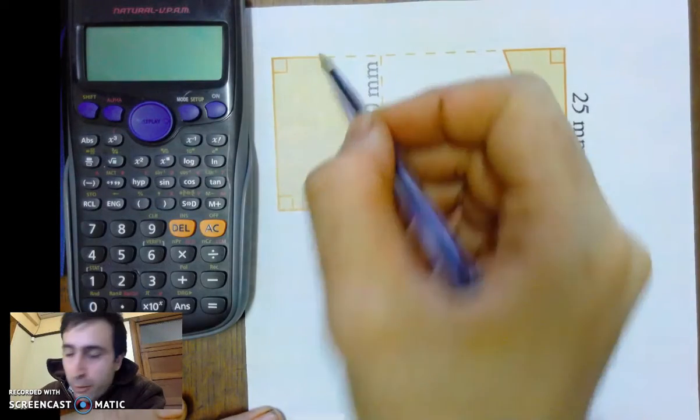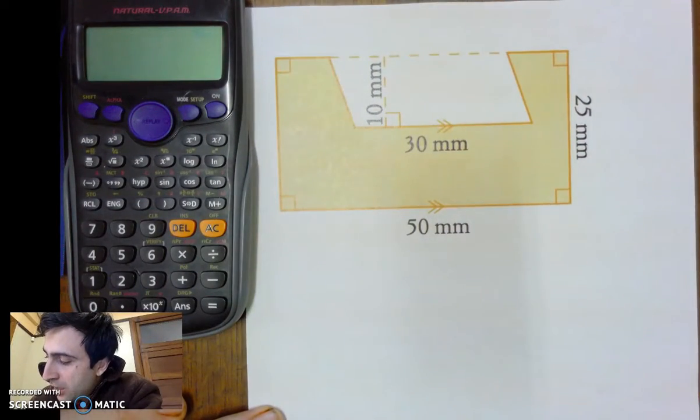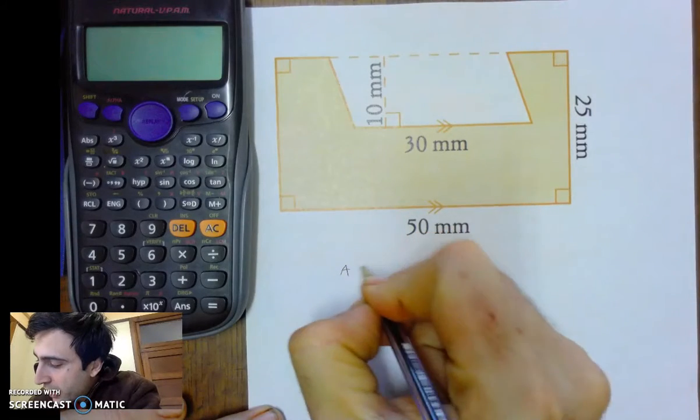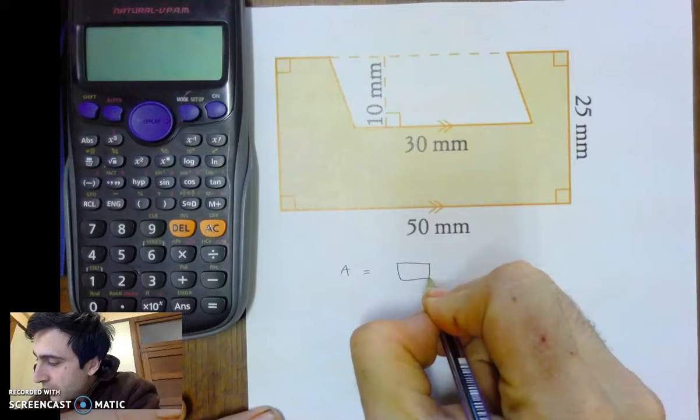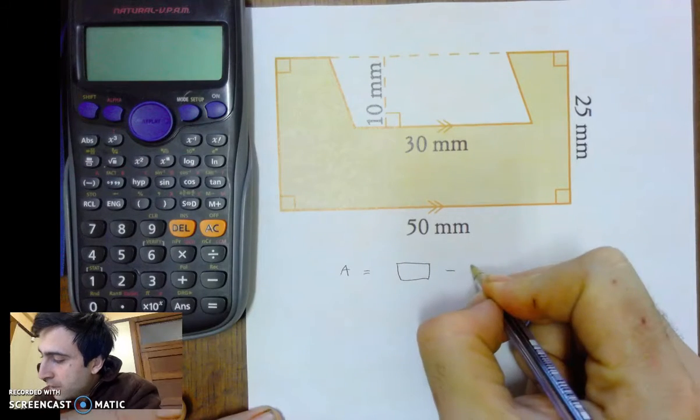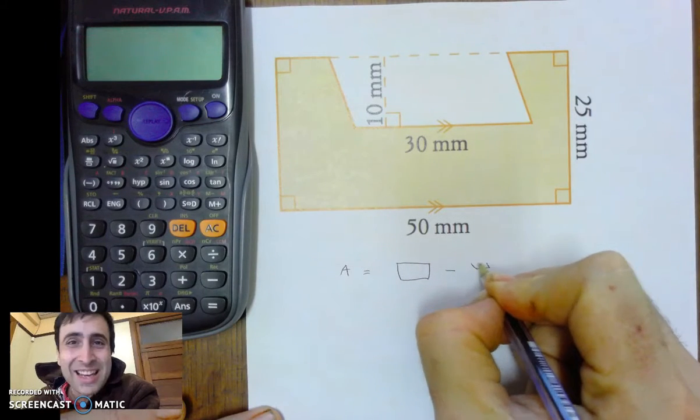This is a rectangle with a parallelogram cut out of it. In other words, taken away from it. So, the area of this one would be the area of the whole rectangle minus the parallelogram at the top. So, this is why I say it's a taking away shape.